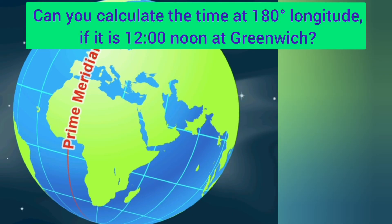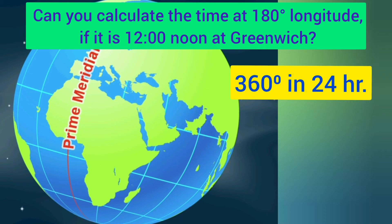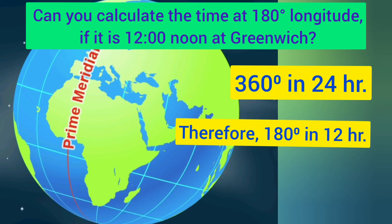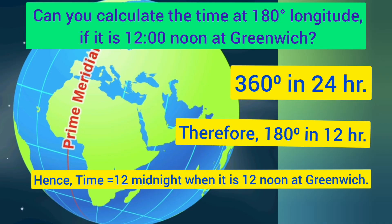Can you calculate the time at 180 degrees longitude if it is 12 noon at Greenwich? Let us do the calculation: 360 degrees are rotated in 24 hours, therefore 180 degrees will be rotated in 12 hours. Hence the time will be 12 midnight when it is 12 noon at Greenwich.